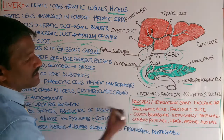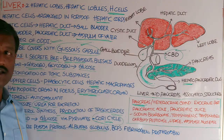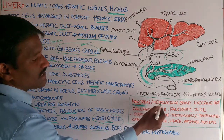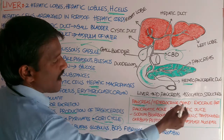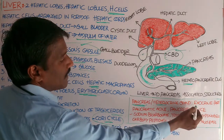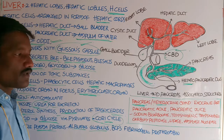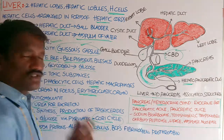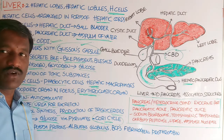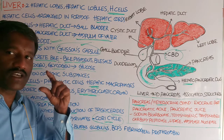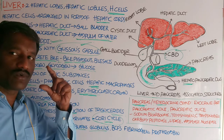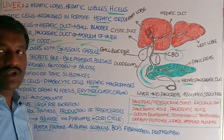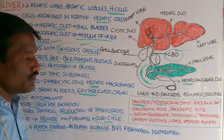The pancreas is the second largest gland in the human body. It is also called a heterocrine gland, and it is sometimes referred to as the sweet gland. It is located between the limbs of the U-shaped duodenum.